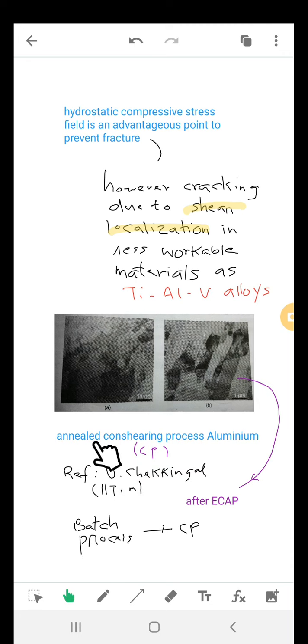This is an example. This is annealed aluminum before any type of ECAP has taken place, and after ECAP has taken place, you can see the shapes have changed and the formation of ultra-fine grains has also taken place.